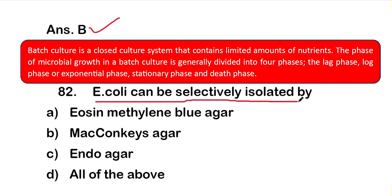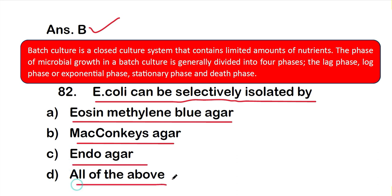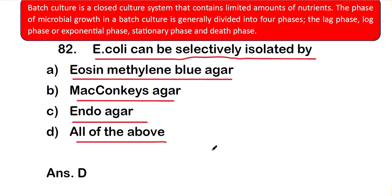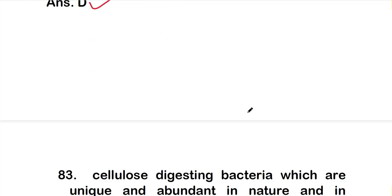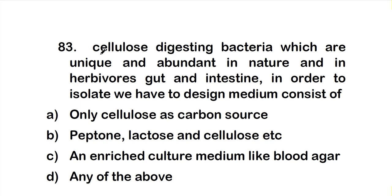Question number 82: E. coli can be selectively isolated by — option A: eosin methylene blue agar, option B: MacConkey's agar, option C: endo agar, option D: all of the above. The right answer is option D, all of the above. E. coli can be selectively isolated by eosin methylene blue, MacConkey's agar, and endo agar.